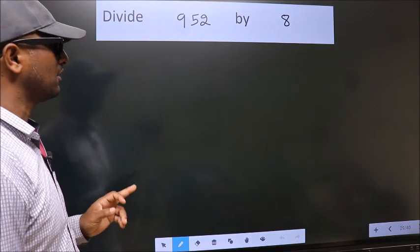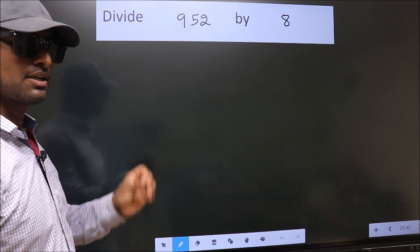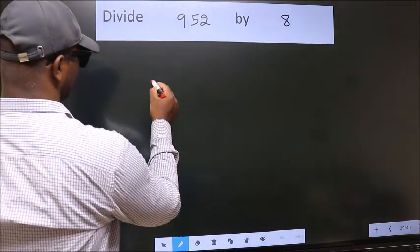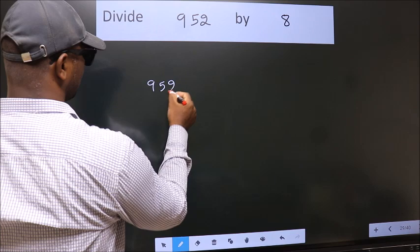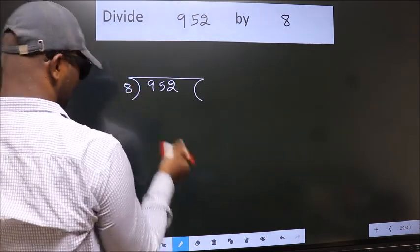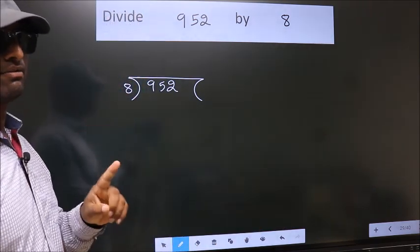Divide 952 by 8. To do this division, we should frame it in this way: 952 here, 8 here. This is your step 1.